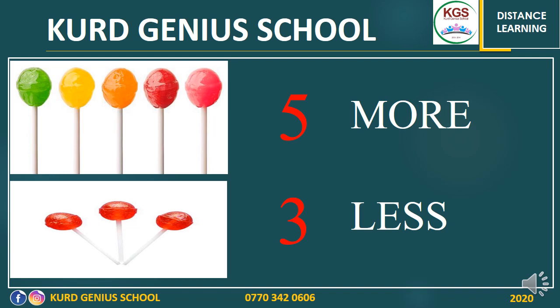Why? Because we have five lollipops, but in the second group, we have only three lollipops. It means five is more than three.